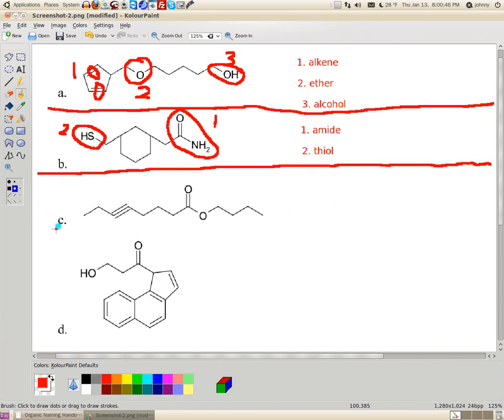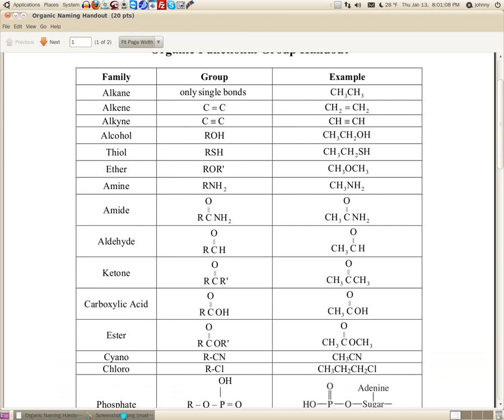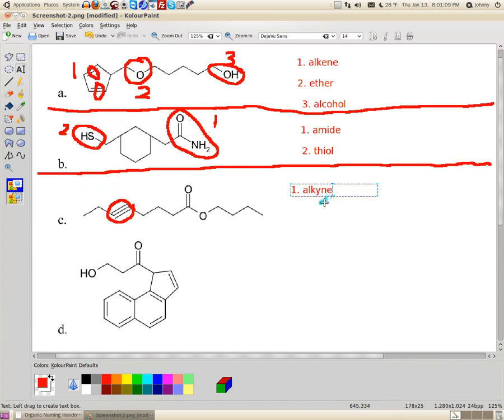Alright, let's look through here. Well, the one that sticks out like a sore thumb instantly on C here is this triple bond. So I know that that is an, what is that? Triple bond. Alkane, alkene, and alkyne. Make sure we spell that right. Yep, A-L-K-Y-N-E, alkyne. Good.